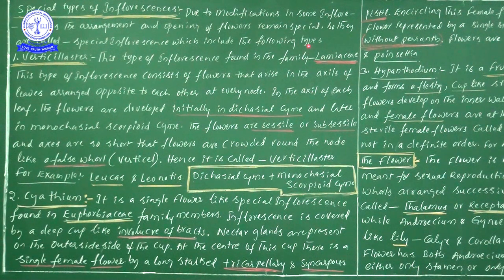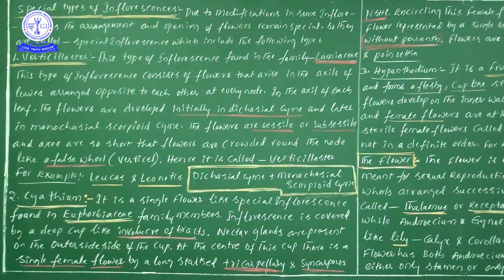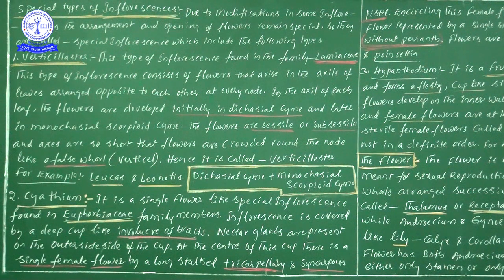Special inflorescences include the following types. First is verticillaster. This type of inflorescence is found in the family Lamiaceae. Lamiaceae family members definitely show the special type of inflorescence known as verticillaster. Save this point in your mind.